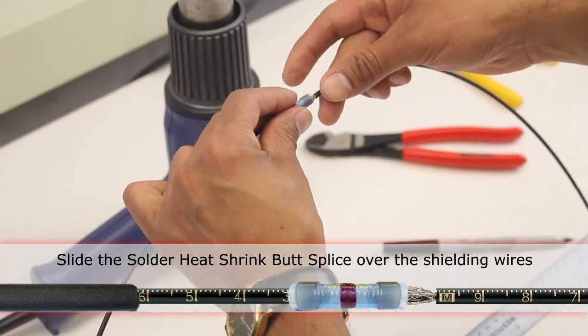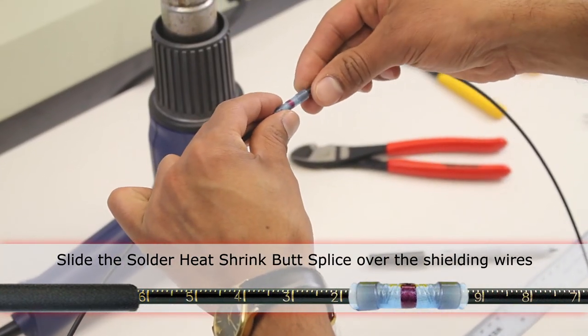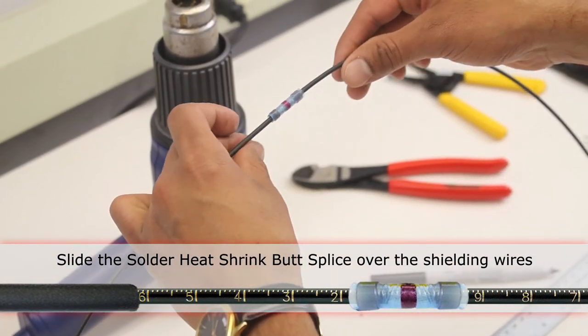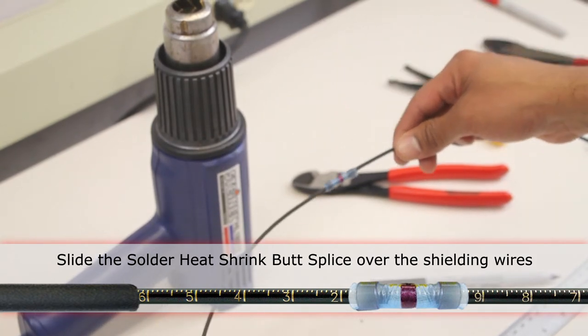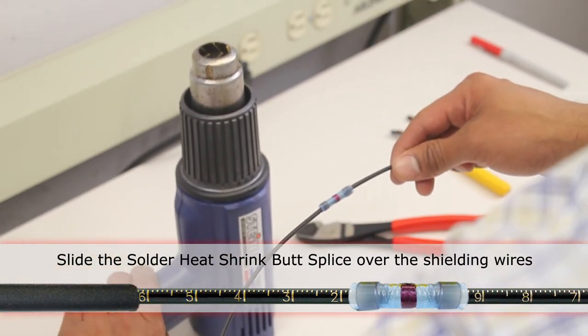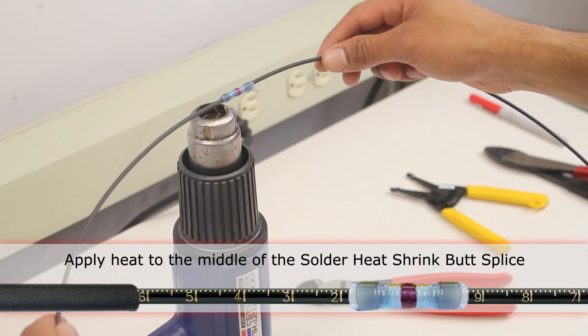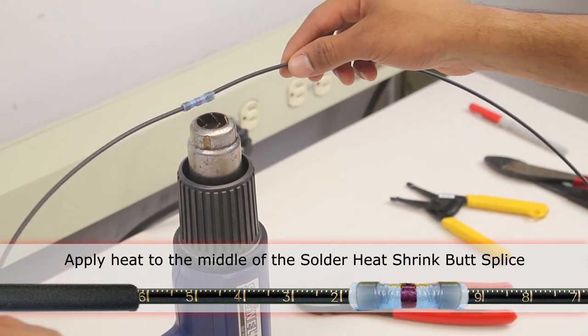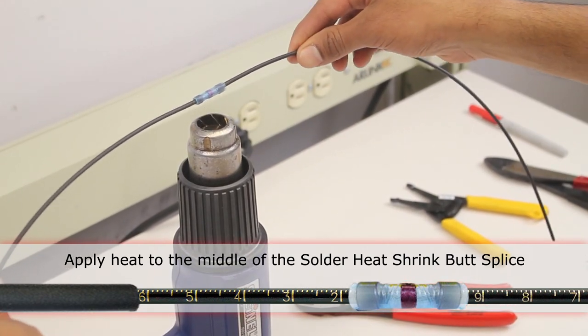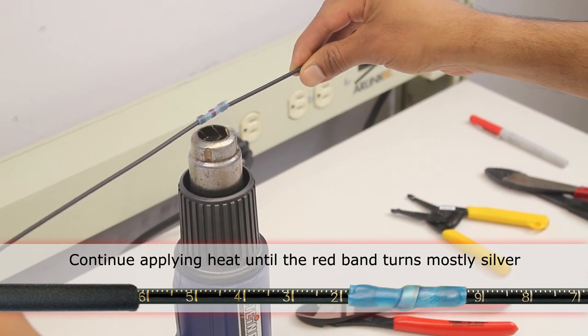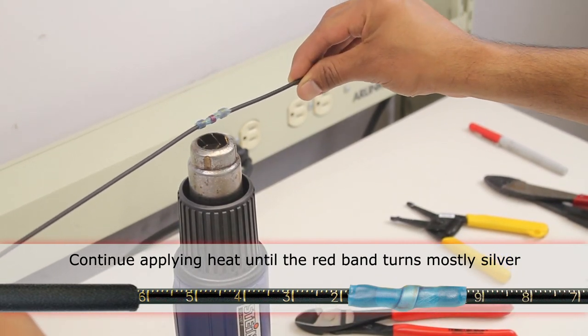Put the splice connector over it. Center it. And then with the heat gun heat shrink it. The other side of the tube is oval. This red ring will become silver.